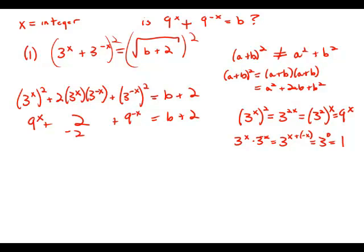Now, if we subtract 2 from both sides, what we get is 9 to the x plus 9 to the negative x equals b. And this is the exact equation that we're being asked about. So it turns out this statement by itself is sufficient.